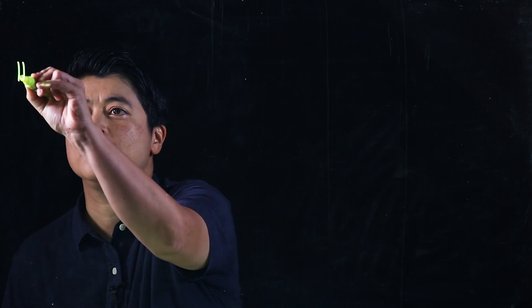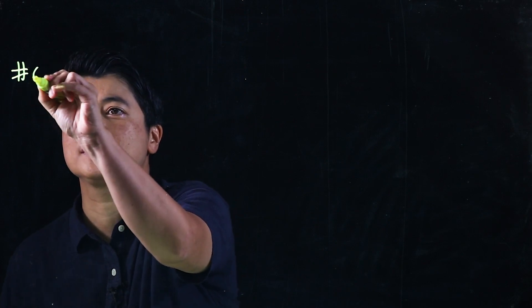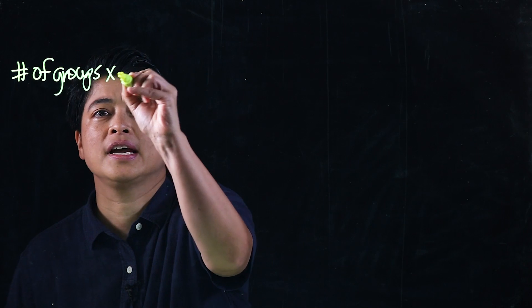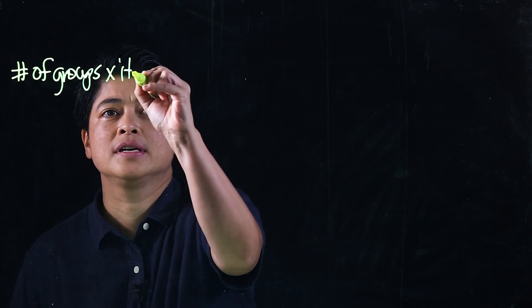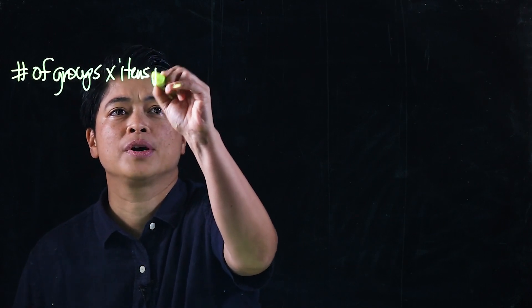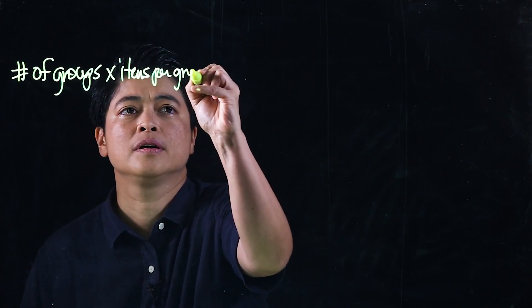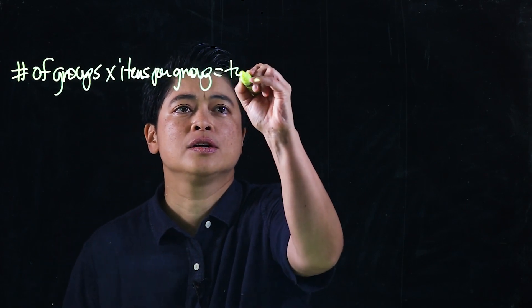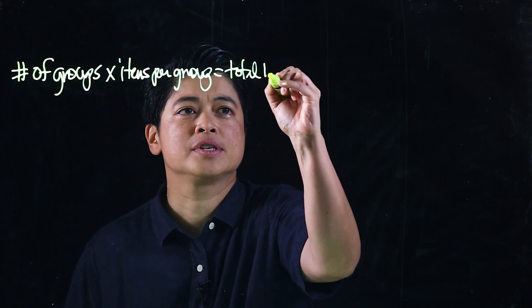Multiplication technically is: number of groups times items per group equals total items.